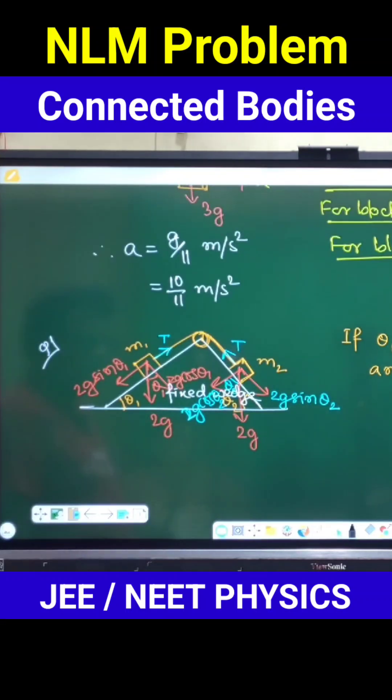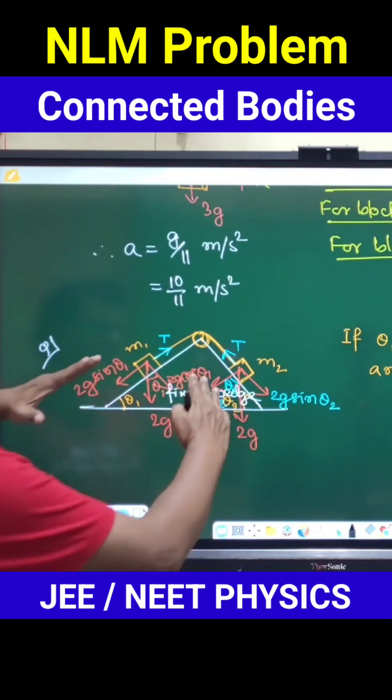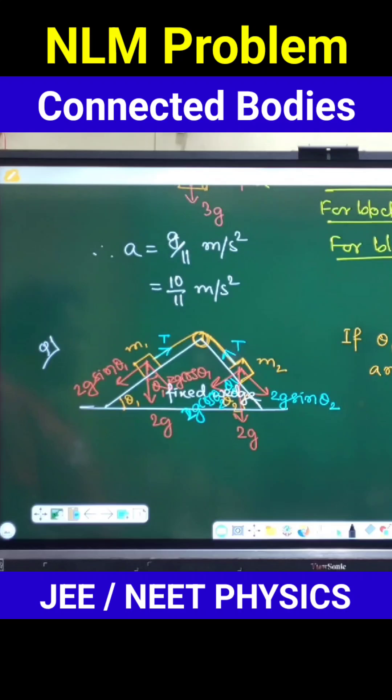So on both the mass, upward force along the inclined plane are same. Both of them are experiencing same upward force on their respective inclined plane, but thus identical bodies both are of 2 kg each.